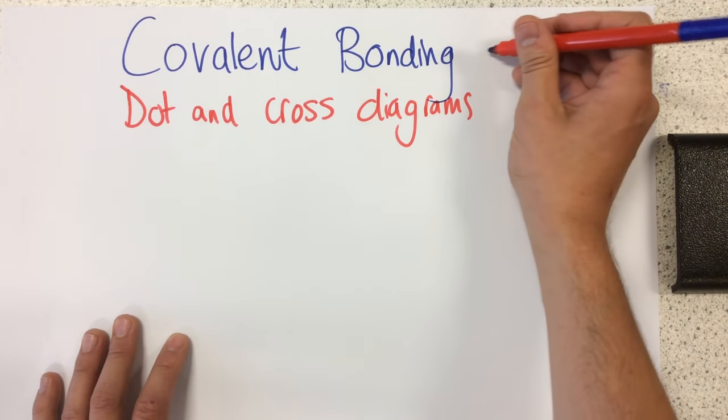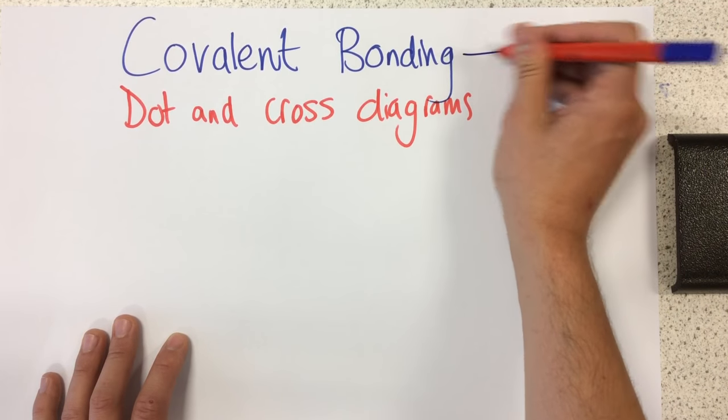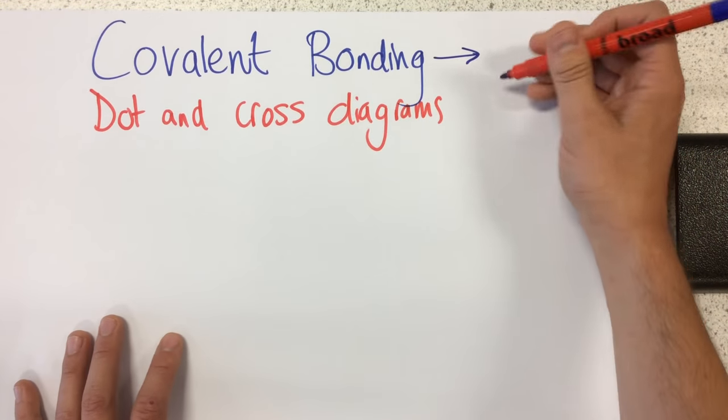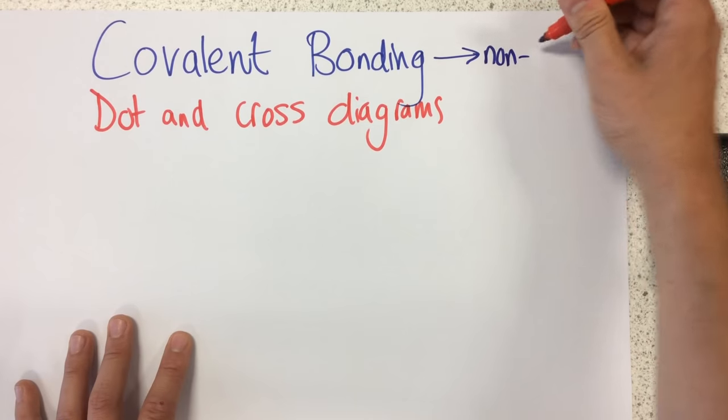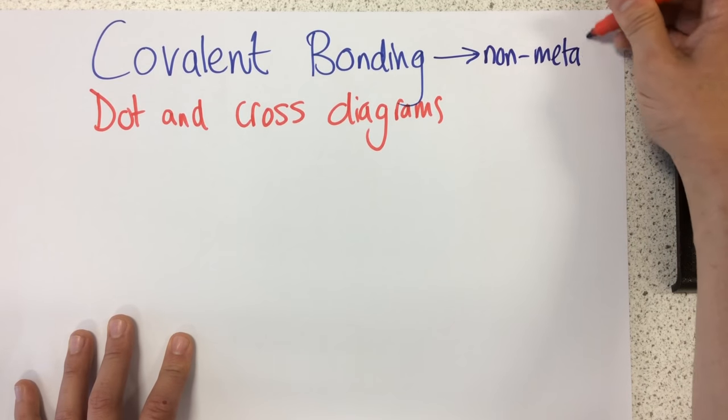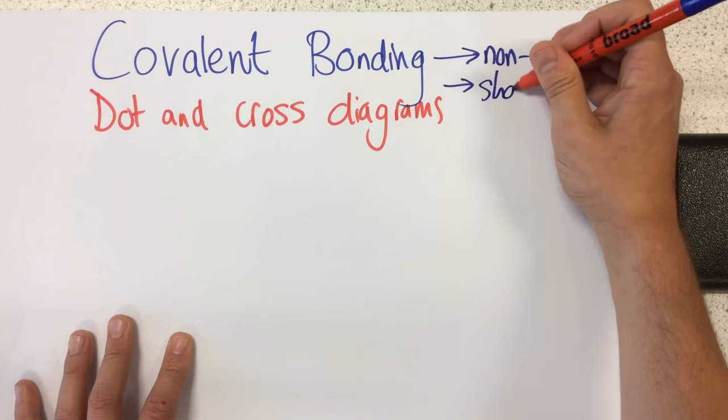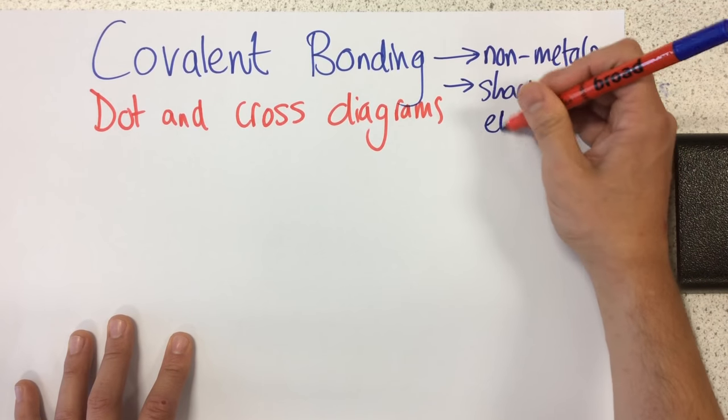So there are a couple of bits of information we need to know before we get started, and that is covalent bonding occurs between non-metals, and also that covalent bonding involves sharing electrons.